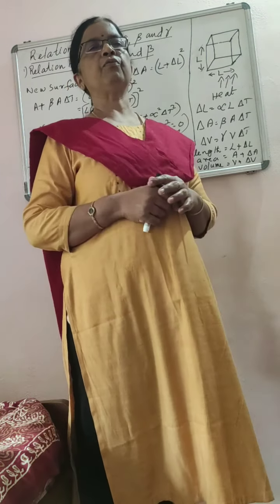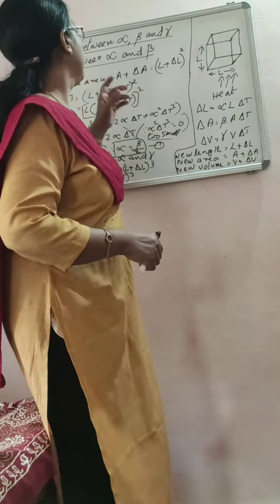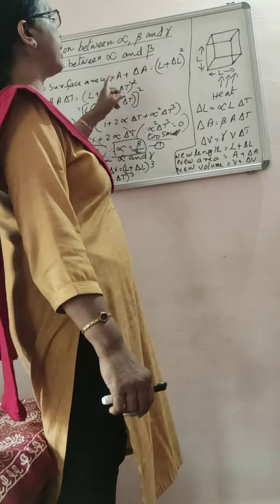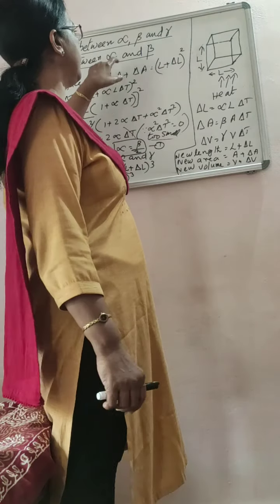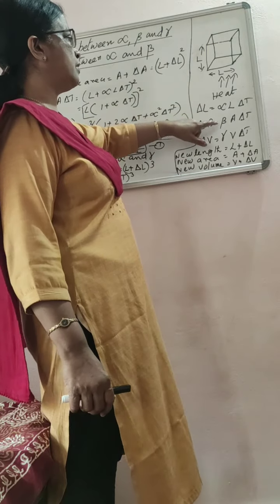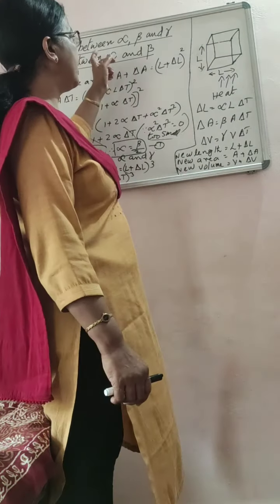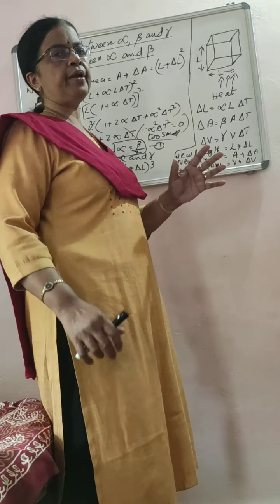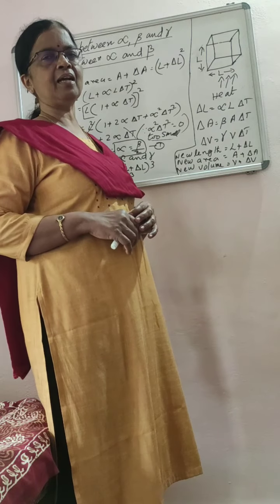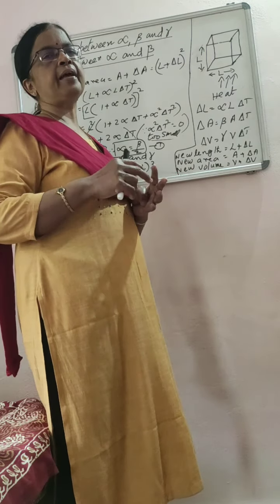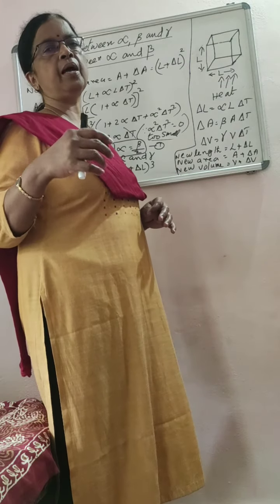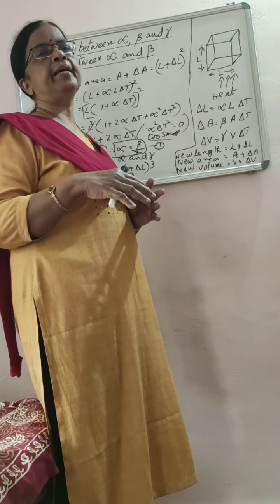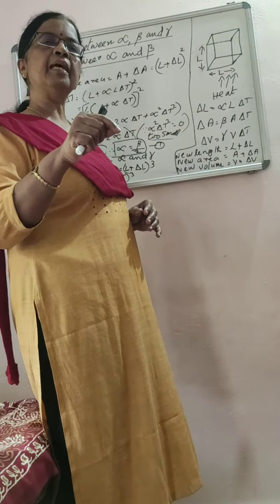So now we are going to find the relation between alpha and beta. For that, we consider area increase only. Beta is the coefficient of area expansion and alpha is the coefficient of linear expansion — what is the relation connecting them? We consider initial length L, and after heating, length increases to L plus delta L. Initial area is A, and its area increases to A plus delta A.